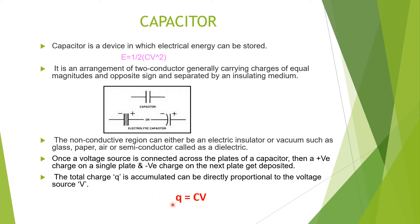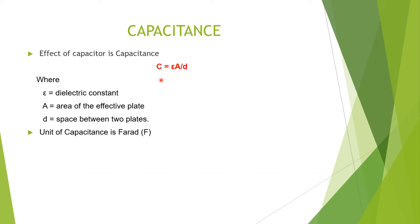Here Q is the charge accumulated on the two plates, C is the capacitance of the capacitor, and V is the voltage applied across the capacitor. Here you can see different symbols for electric capacitors. There is one more equation for capacitance: C is equal to epsilon times A divided by D, where epsilon is the dielectric constant, A is the area of the effective plates, and D is the distance between the two plates.